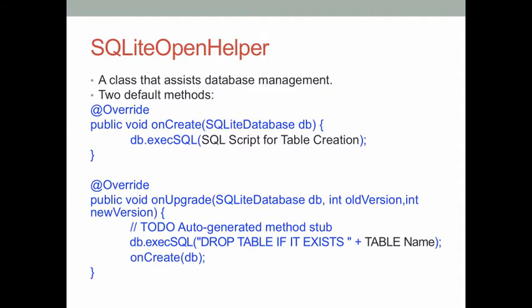We have so many database management processes in an Android project. We use a new class called SQLiteOpenHelper to keep the database management process organized. Once you implement the SQLiteOpenHelper, you will have two default methods given automatically. The first is an onCreate method and the second is an onUpgrade method — they are given by the Android operating system automatically.